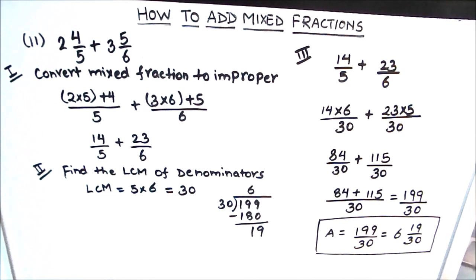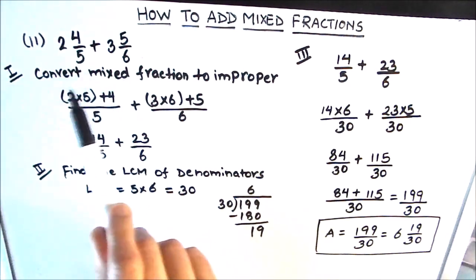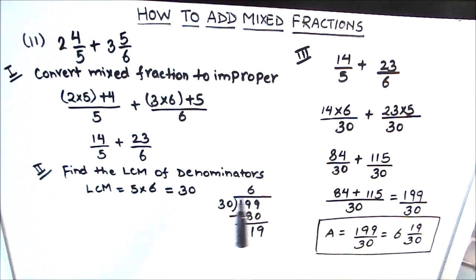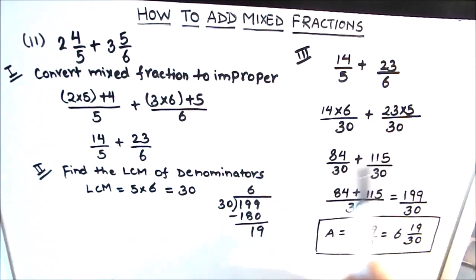Let's take a recap of the method. The first step in adding mixed fractions is to convert the mixed fractions into improper fractions. The second step is to find the common denominator or the LCM of the denominators. The third step is to add the two fractions as improper fractions. I hope this video is helpful to you. If you like the video, please hit the like button and subscribe to my channel for more math videos. Thanks for watching!